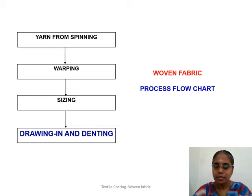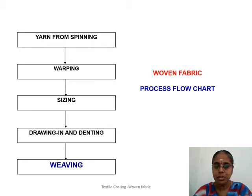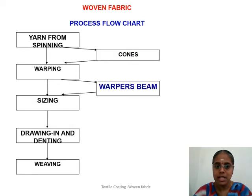The sized yarn is fed to the weaving loom. Before that, each warp end has to be controlled for the weaving process. The drawing-in and denting process takes place, which is the insertion of the yarn into the heald eye. The next and final process is woven fabric formation, which is called weaving. The raw materials fed and the name of the beams: the cones have the yarn and that is fed to the warping process, and out of the warping process the yarn in sheet form is called the warper's beam.